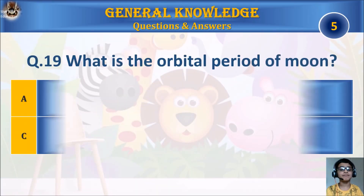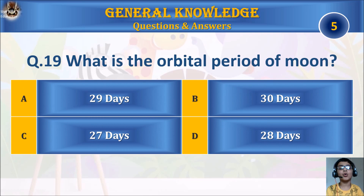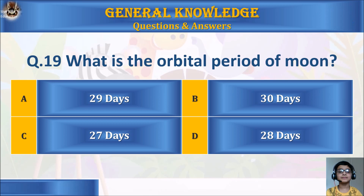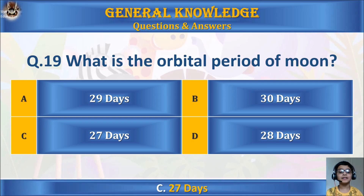Question 19: What is the orbital period of the Moon? A. 29 days, B. 30 days, C. 27 days, or D. 28 days? Your time starts. The answer is C. 27 days.